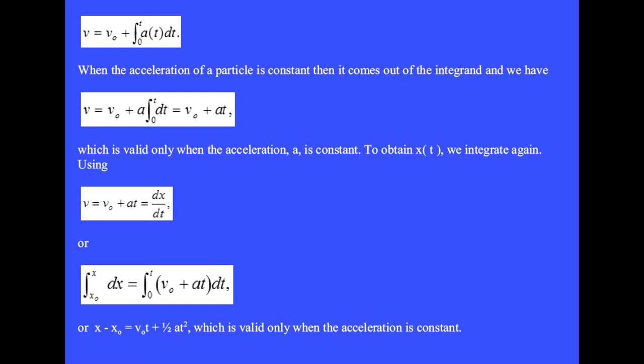To obtain the position x(t), we integrate again. Using v equals v zero plus at equals dx/dt, integration gives x minus x zero equals v zero t plus one half at squared, which is valid only when the acceleration is constant.